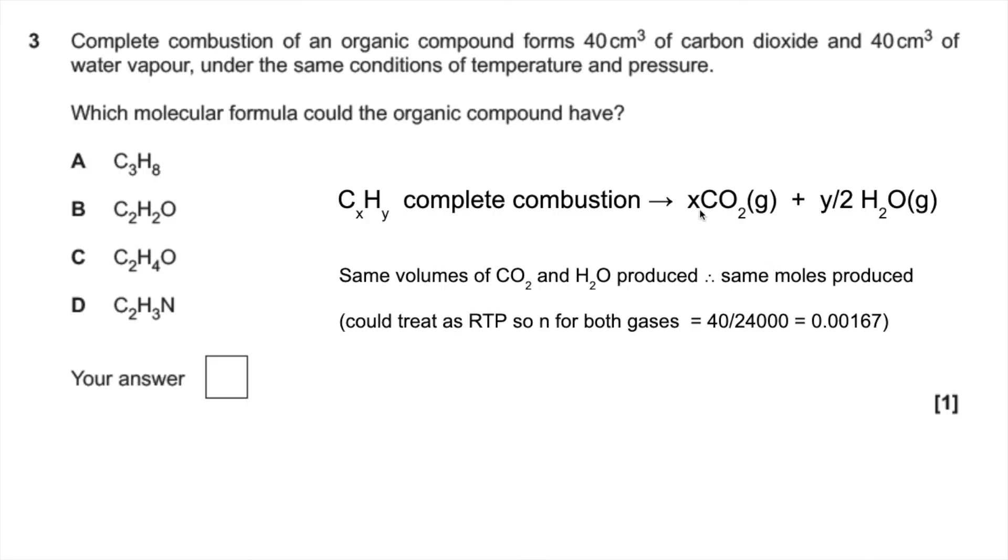So what we can say now is that the X and Y over 2 must be the same. So therefore, Y must be 2X. So you can now see that the Y value is going to be 2 times greater than the X value, and so it has to be C.